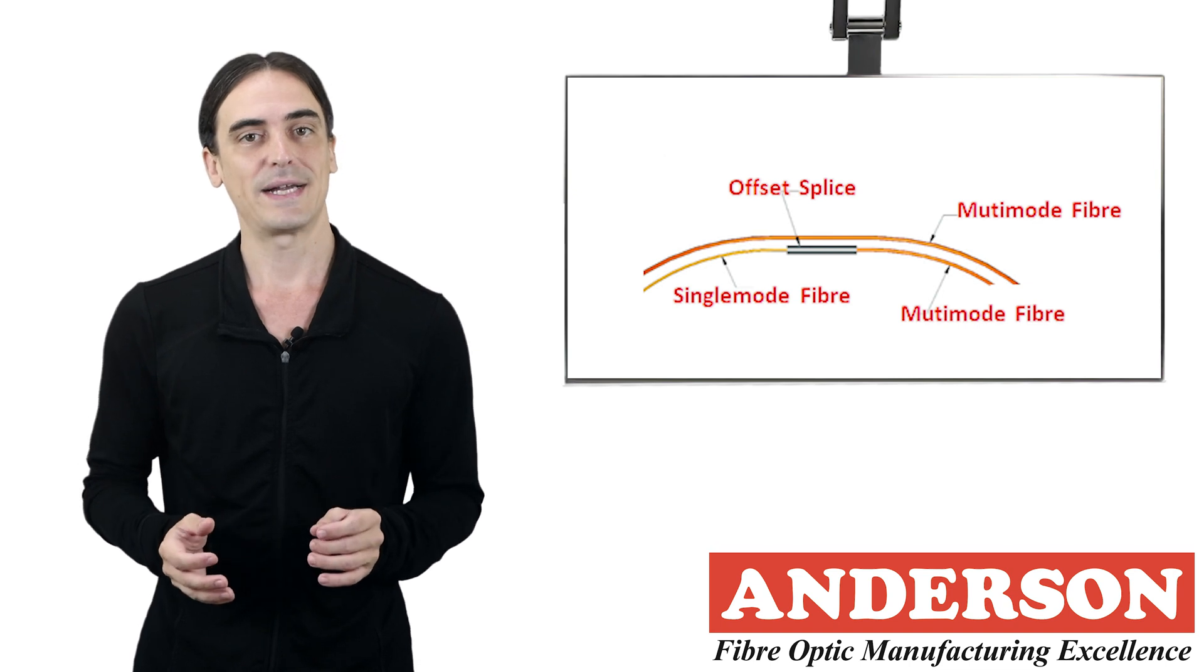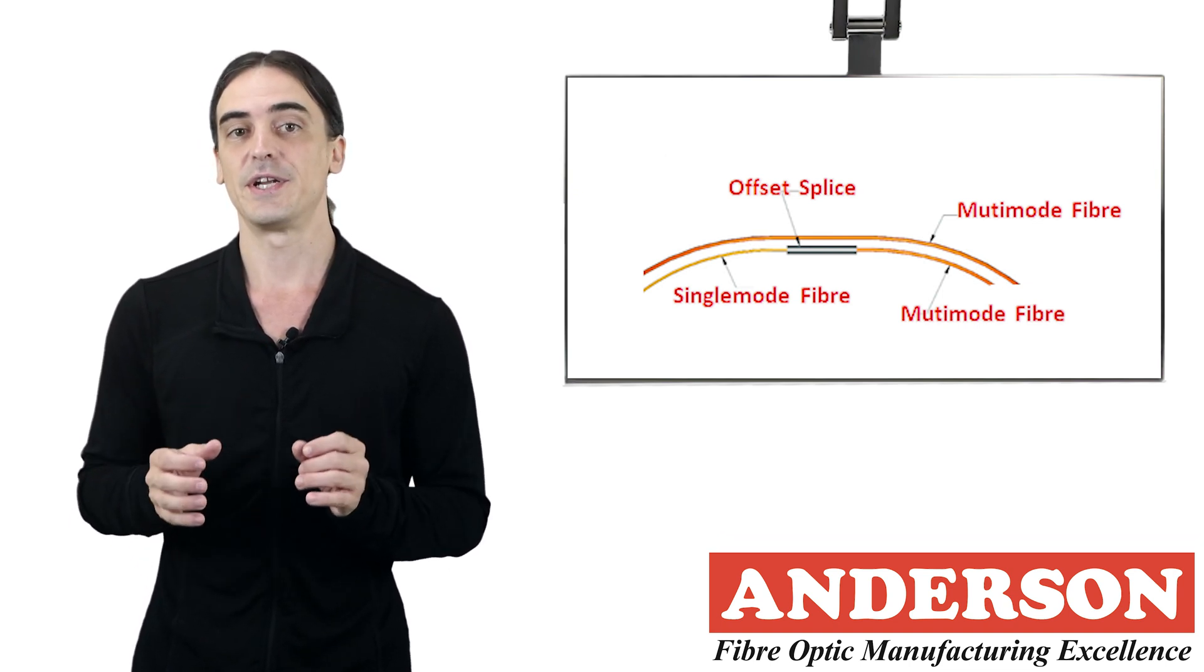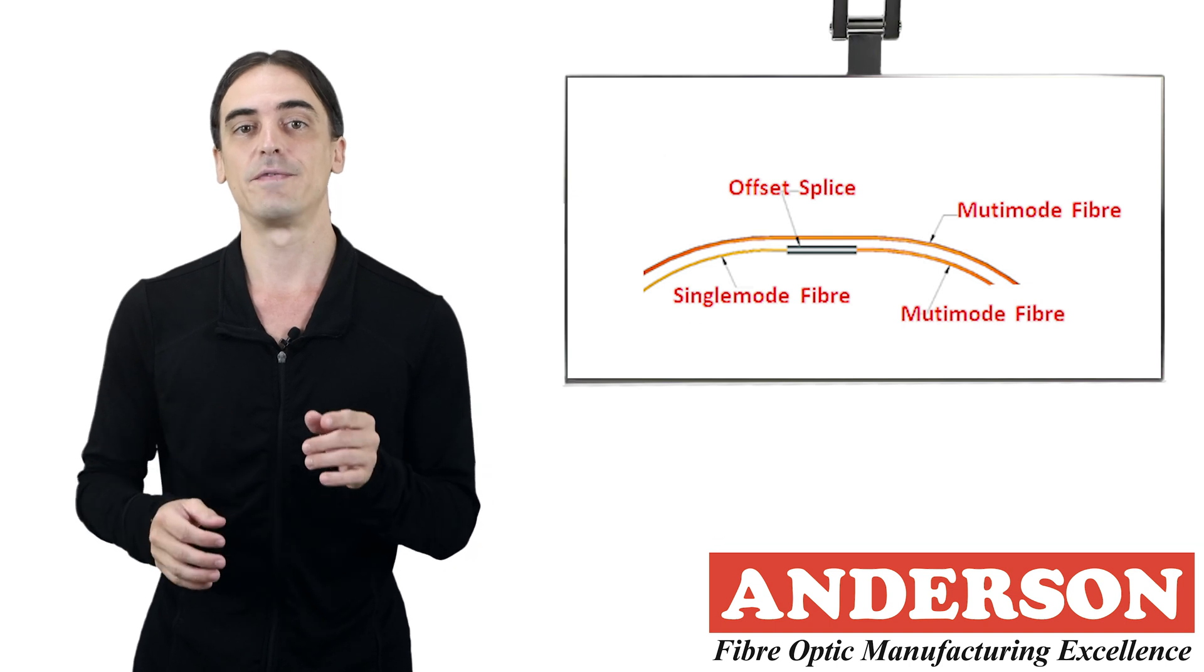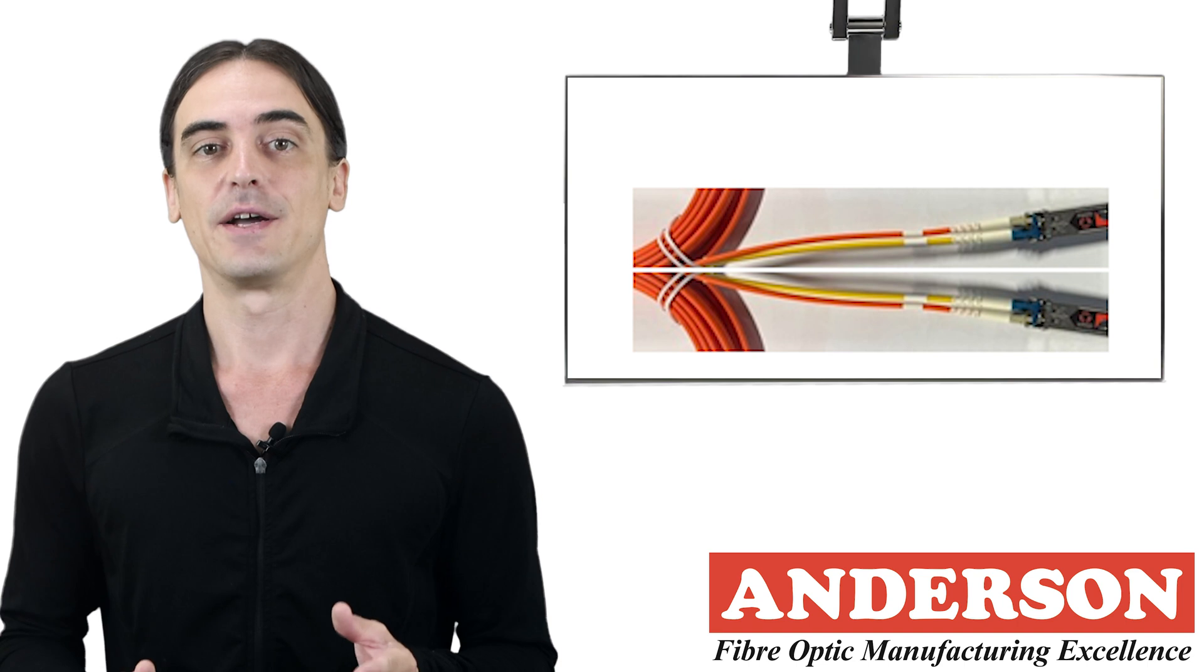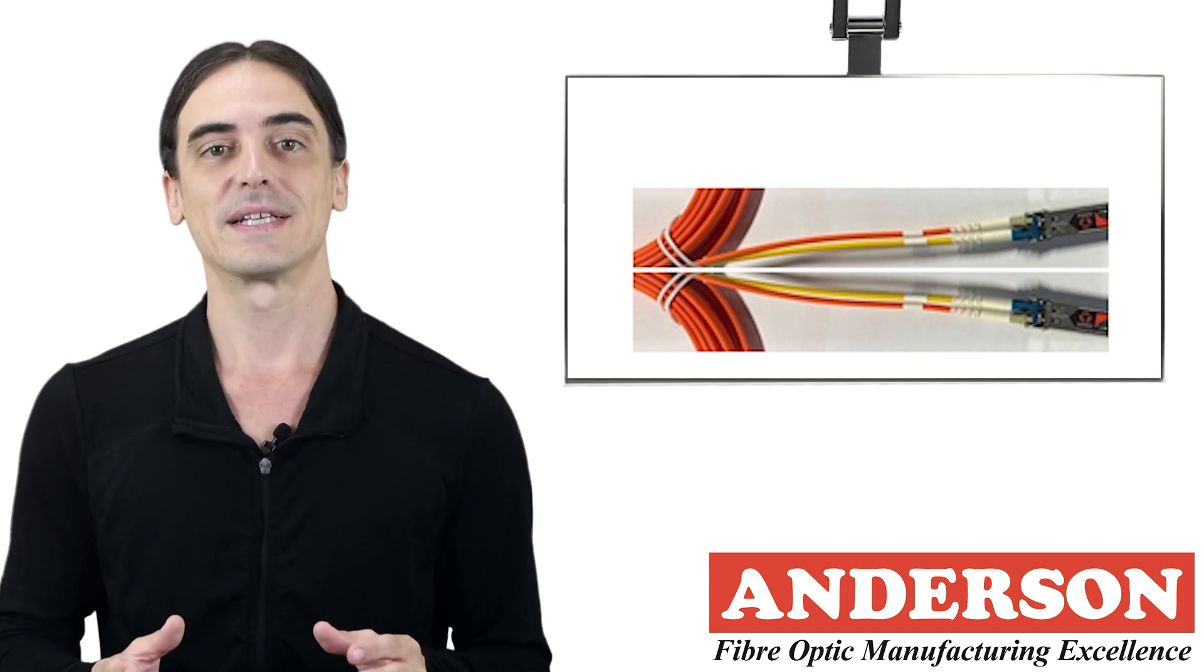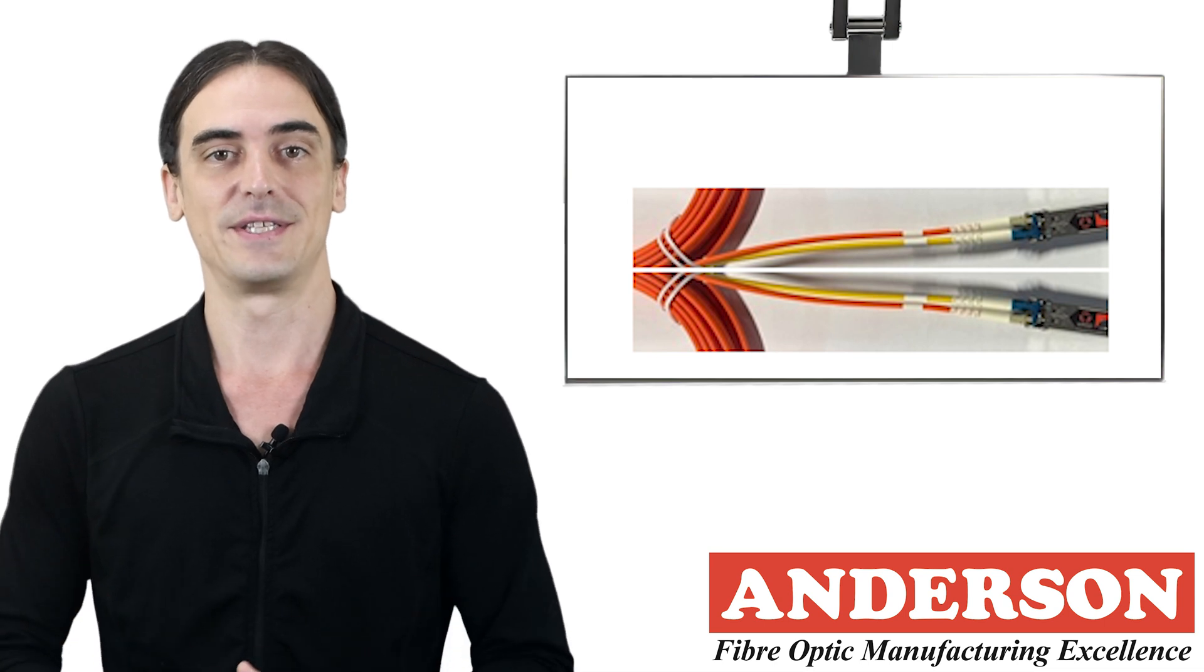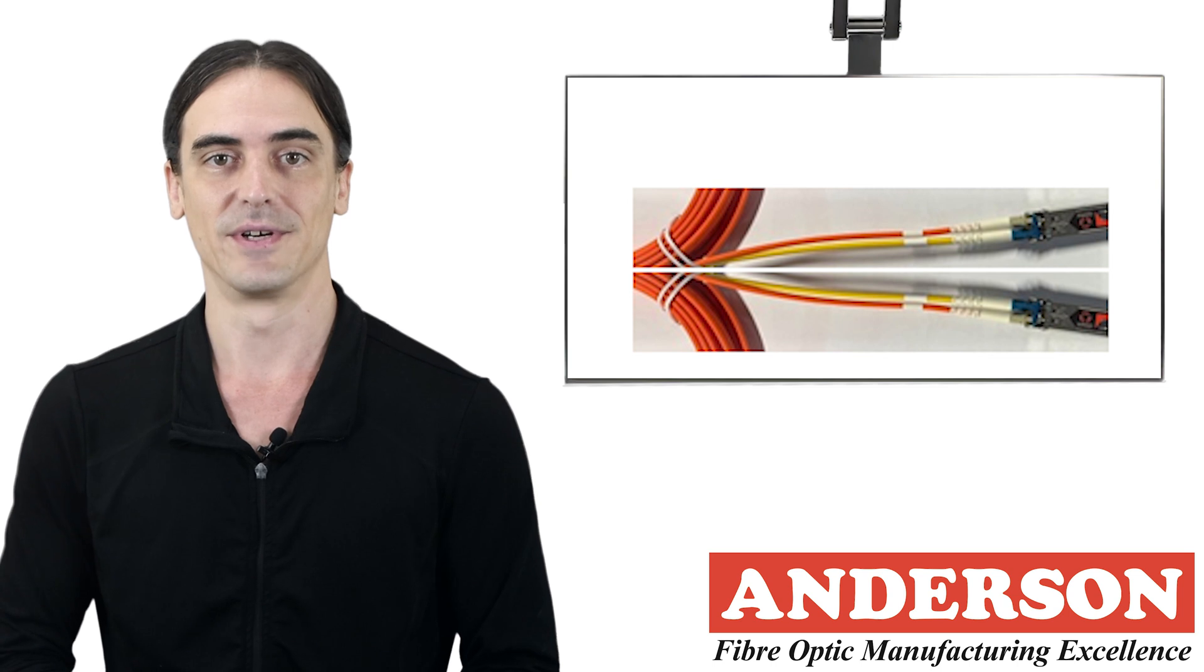Mode conditioning patch cables need to be used in pairs, meaning you will need a mode conditioning patch cable at each end of the transmission equipment. It is important that the conditioned side of the mode conditioning cable, which is the yellow single-mode fiber, is connected to the transmit side of the transceiver and the orange-leg multi-mode be connected to the receiver side of the transceiver.